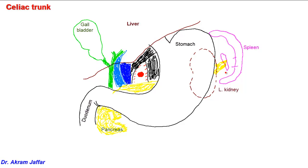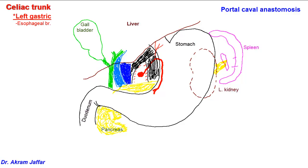The celiac trunk has three large branches. The smallest of them is the left gastric artery. The left gastric artery passes on the posterior abdominal wall across the left crus of the diaphragm, then leaves the posterior abdominal wall to pass into the lesser omentum between the two leaves along the lesser curvature of the stomach. The left gastric artery supplies an esophageal branch to the distal reaches of the esophagus. The accompanying veins drain into the left gastric vein, which drains into the portal vein. The esophagus upwards is drained by the azygous system of veins, which drain into the superior vena cava. These veins anastomose at the distal end of the esophagus, providing a site of portal-caval anastomosis.